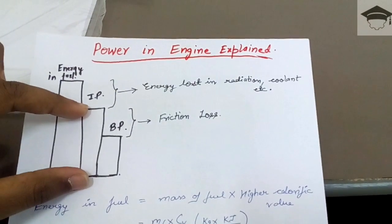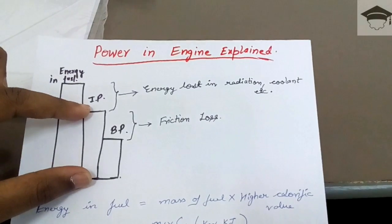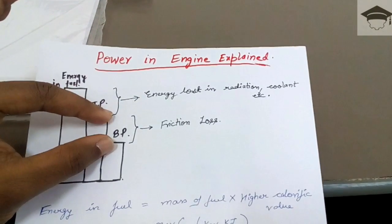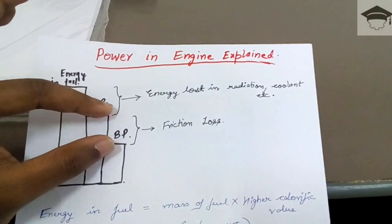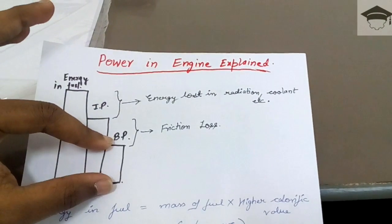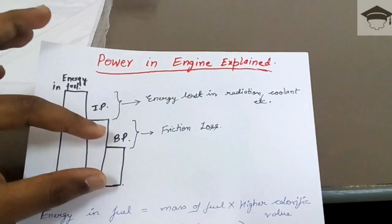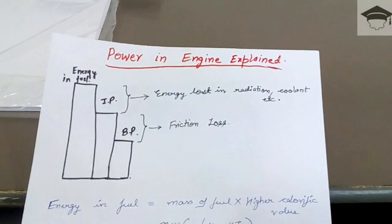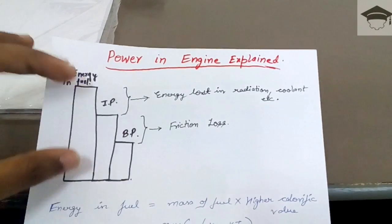From the indicated power, a further amount of energy is lost — this is known as friction loss. Finally, what remains is known as brake power, which is the power we actually get from the engine to run the car.